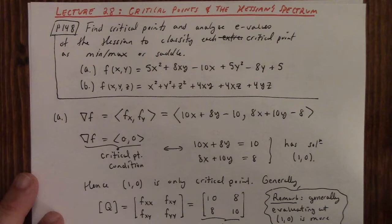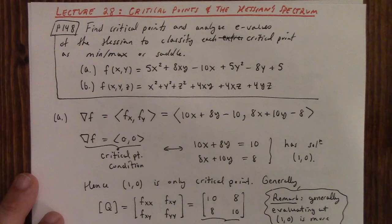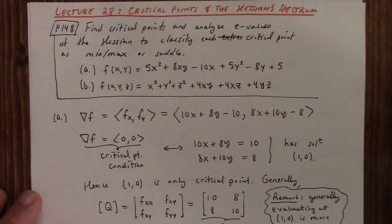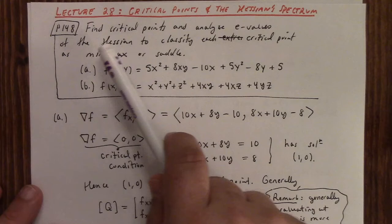So if the first order part is zero because it's a critical point, then the second order part dominates the expression. And the nature of the second order part can be understood by studying its spectrum, which is to say by studying its eigenvalues. All right, so that's what I do in these examples here. The question asks us to find the critical points and to analyze eigenvalues of the Hessian to classify